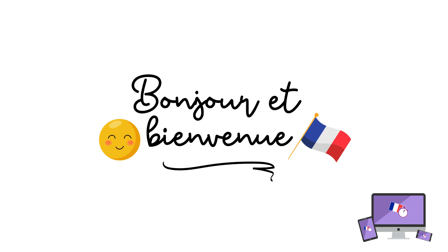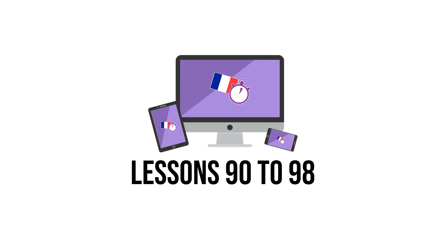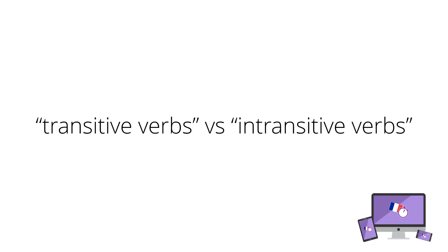Course 11 in the 3-Minute French series contains lessons 90 to 98, and in it we learn so much useful French. We start exploring the world of grammar in a bit more depth in this course, and we look at the difference between transitive verbs and intransitive verbs.